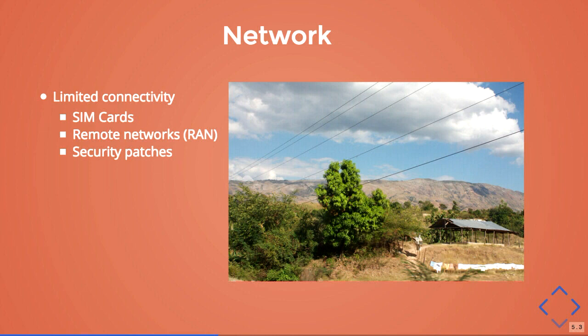Because of SIM card connectivity, network signal can be inconsistent — it might work in one spot but not another. You have to find a spot in the clinic with the best connectivity, but it has to be hidden so it won't be stolen. Sometimes you have to go to the roof to find a spot with signal, and it can go down for a couple of hours depending on the weather. There's even a photo showing that the entire internet cable for half of Haiti runs through a single cable — if you cut it, half of Haiti loses internet.